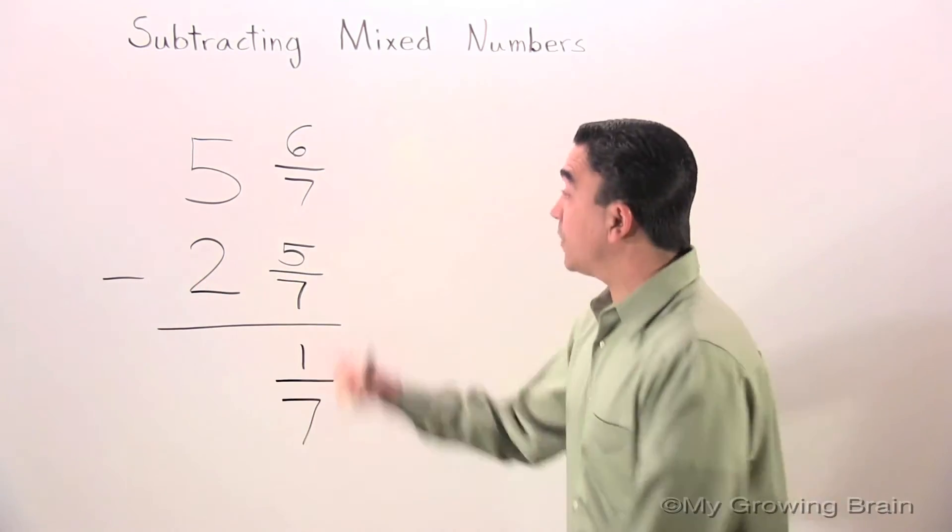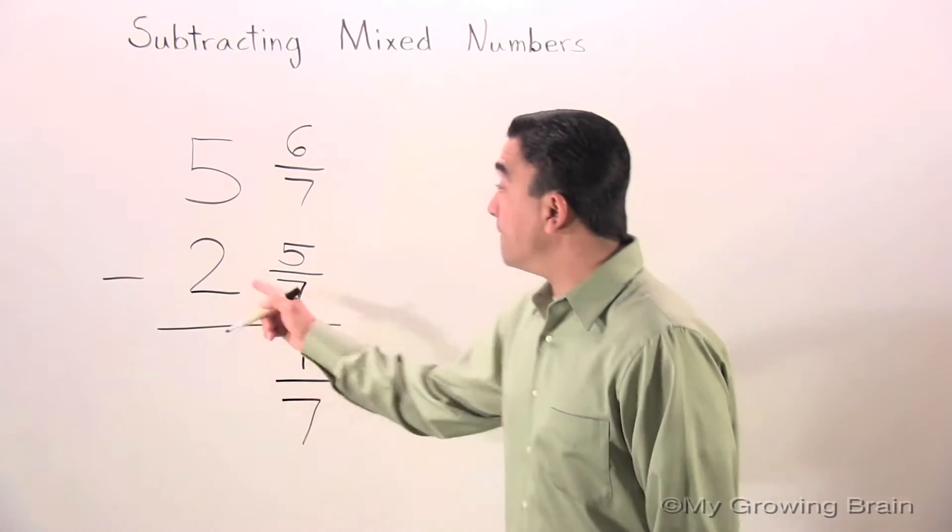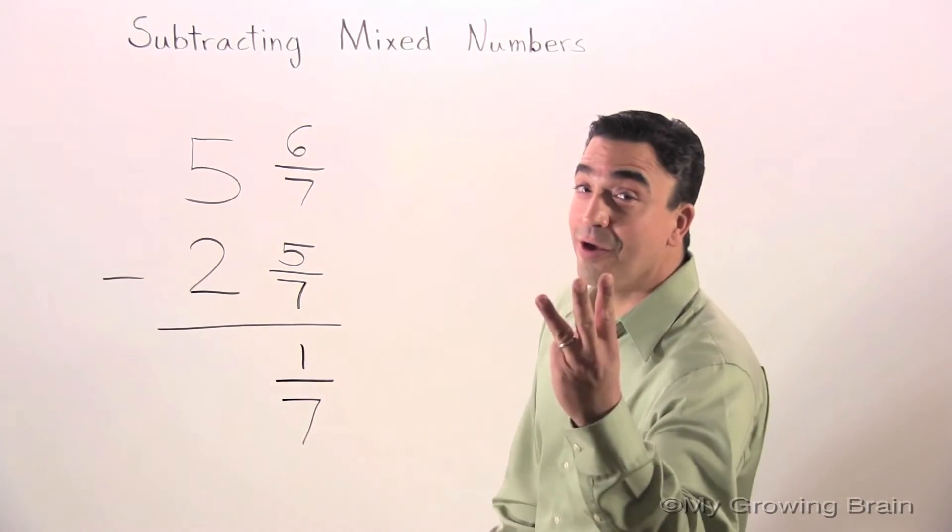Now we're going to subtract the whole numbers. 5 minus 2, 3.